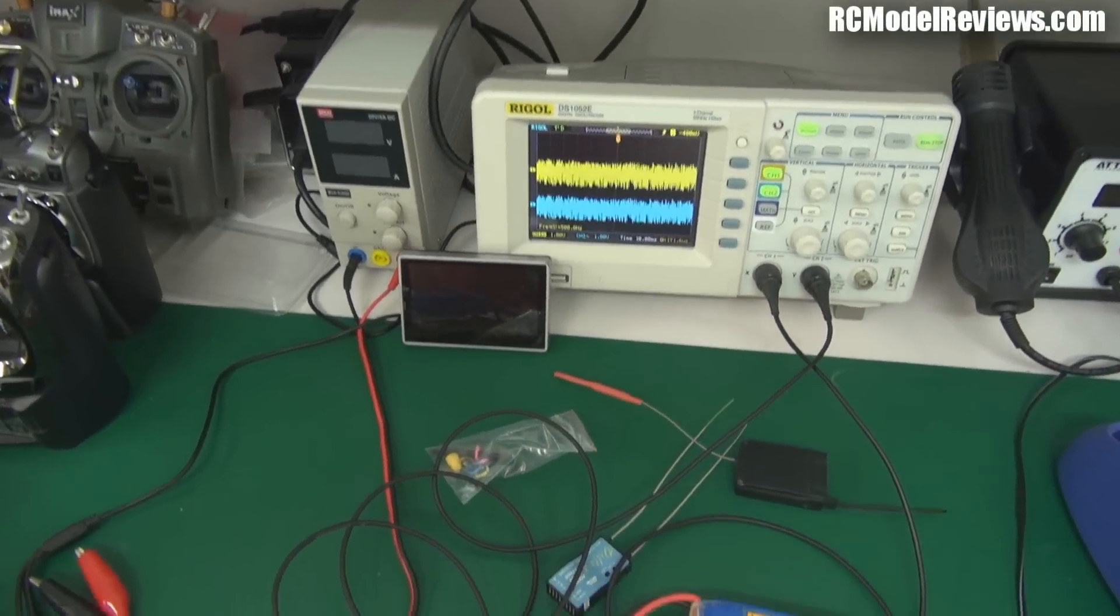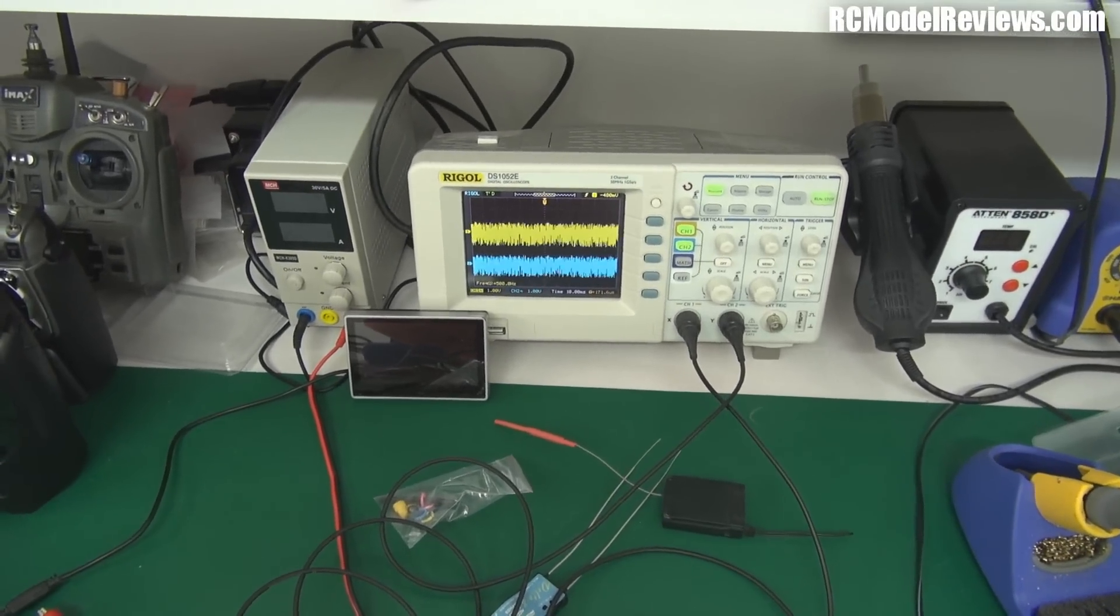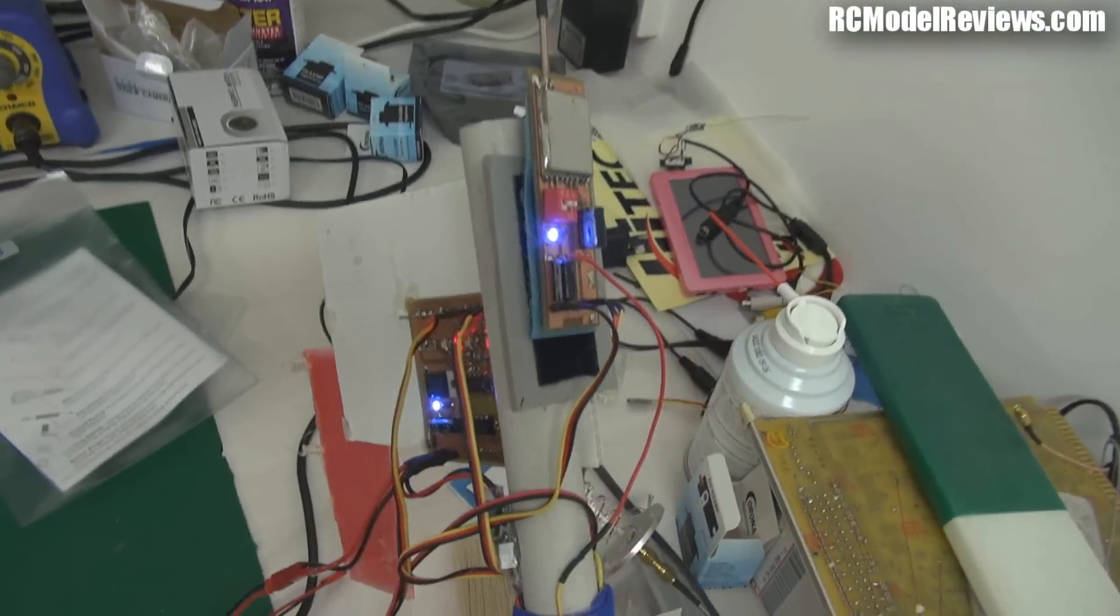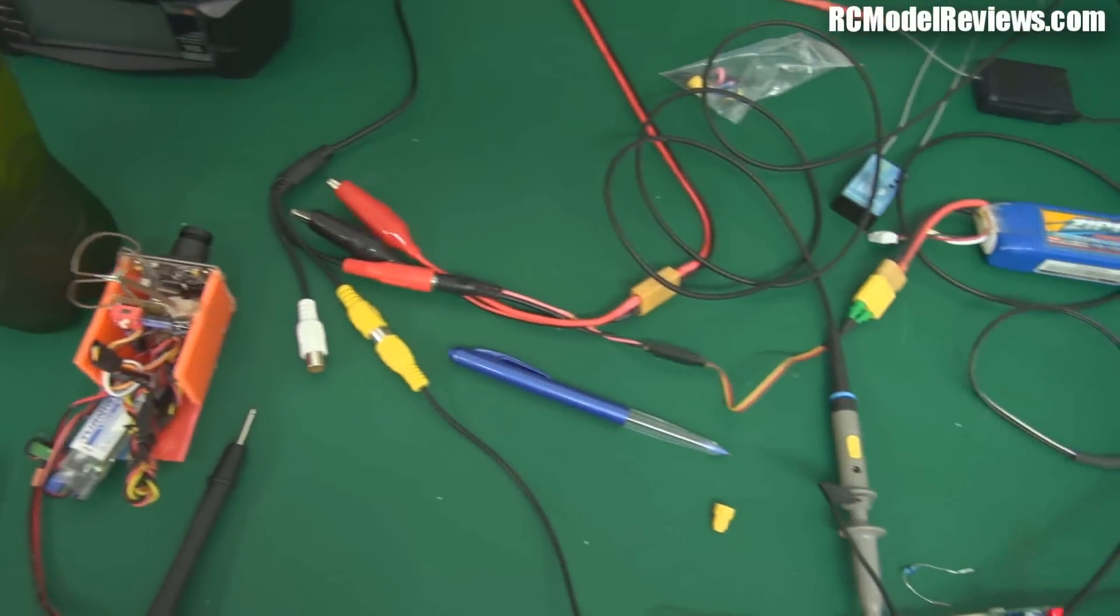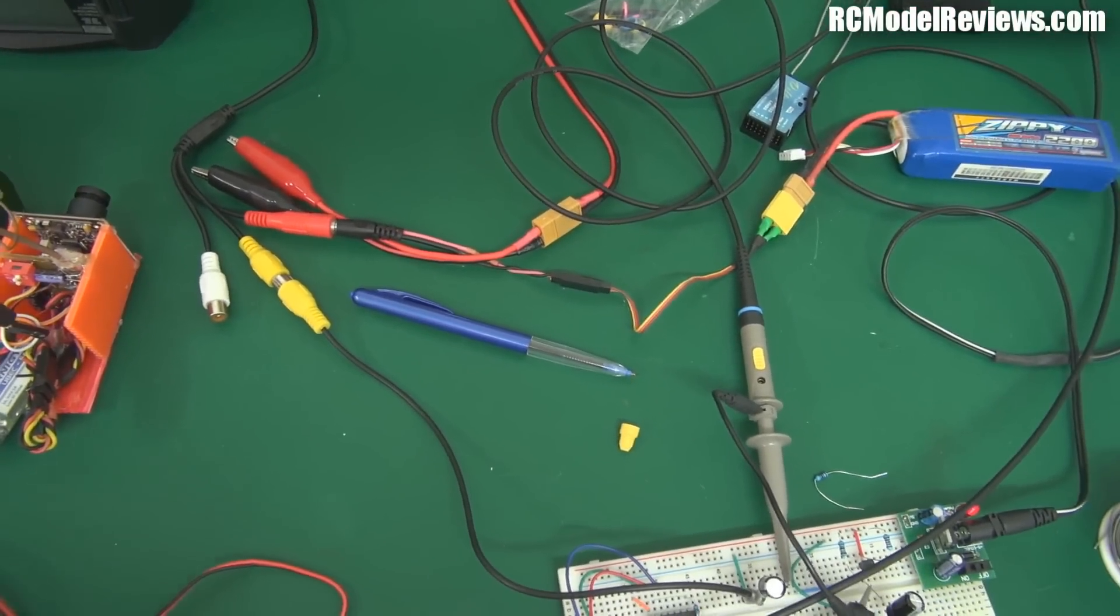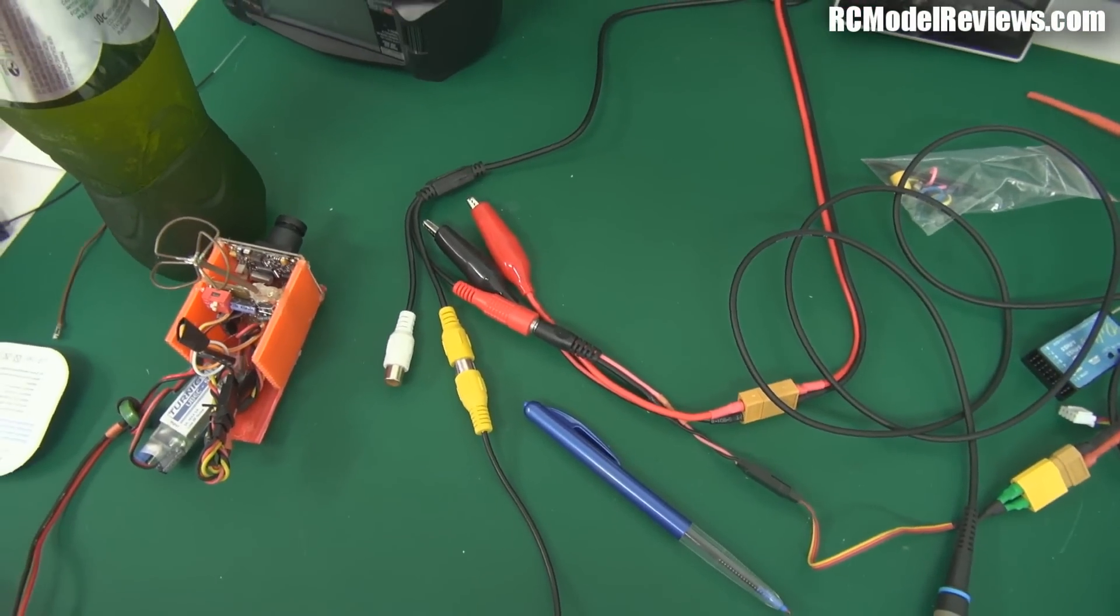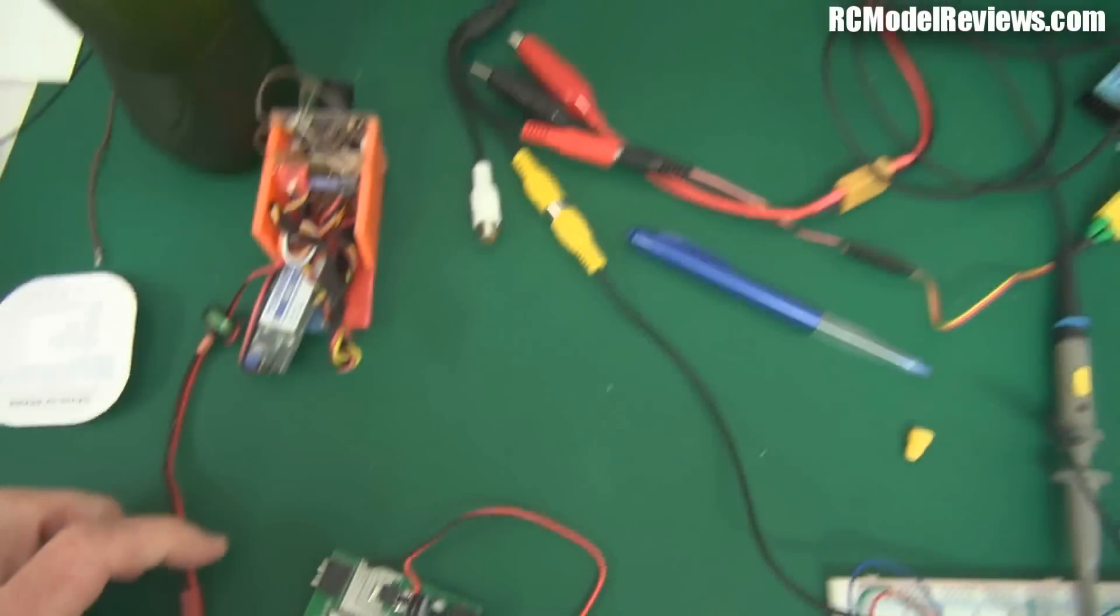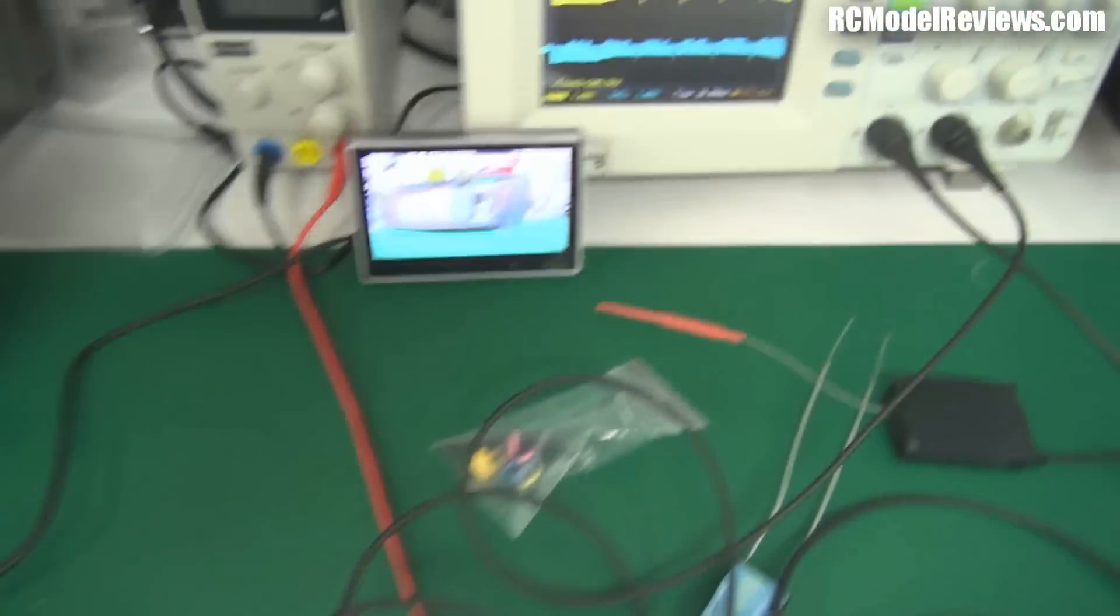As you can see, the yellow trace and the blue trace is what's coming out, and at the moment it's just noise because over here I've got the diversity controller hooked up but there's no signal coming in. I'm using the FPV backpack here which I've unplugged because I've been testing it, but I'll plug it back in and we'll see if we can make stuff happen.